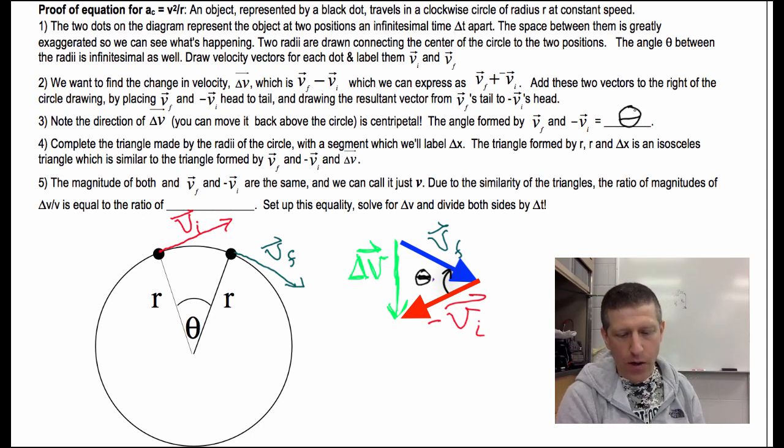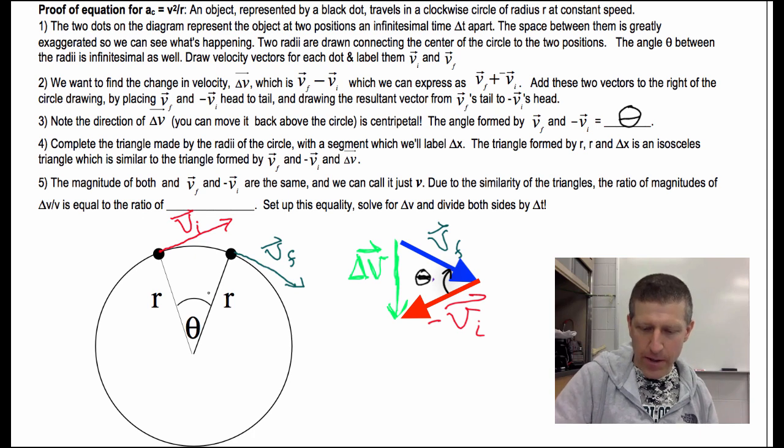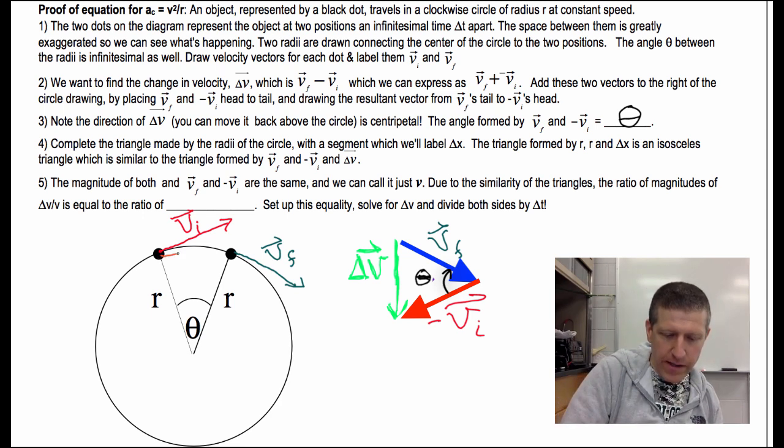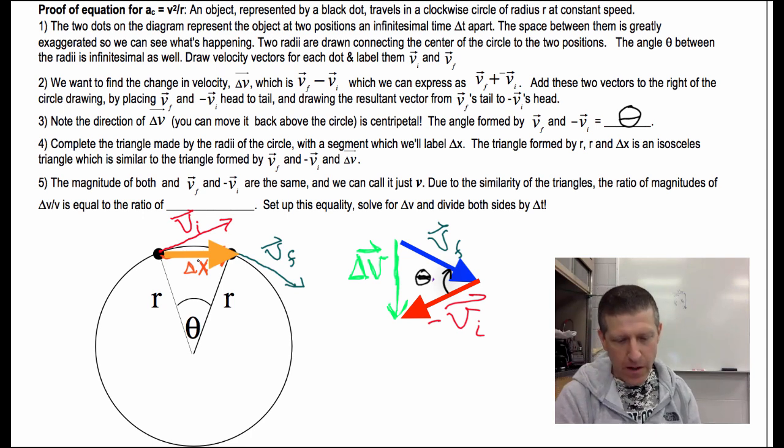So what we have here, so the angle formed by V final and negative V initial is, in fact, theta. Now, we're going to complete the triangle made by the radii. These two radii, we're going to complete that. I'm going to use yet another color here. Let's see if we can use this. Some of you guys can see orange. Here is, this is the displacement. And again, this is an infinitesimal displacement, which I'm going to label delta X. That displacement right there is delta X. So I've got that, and we'll call it delta X. The triangle formed by R, R, and delta X, this triangle, is an isosceles triangle, which is similar to this triangle.